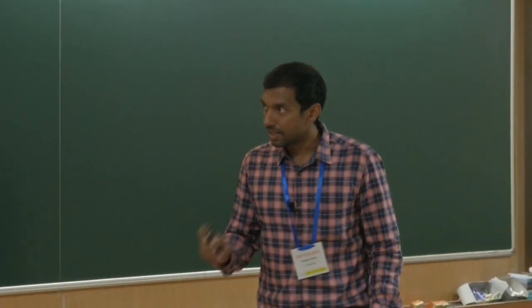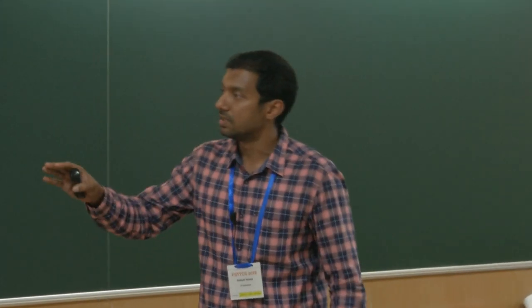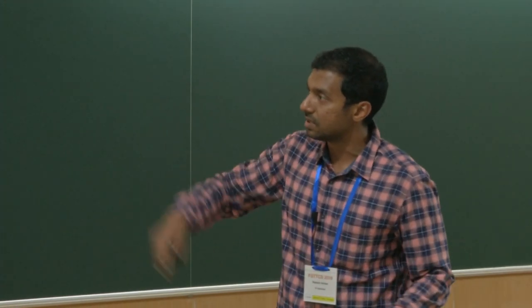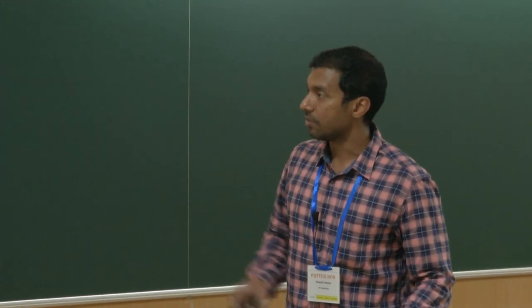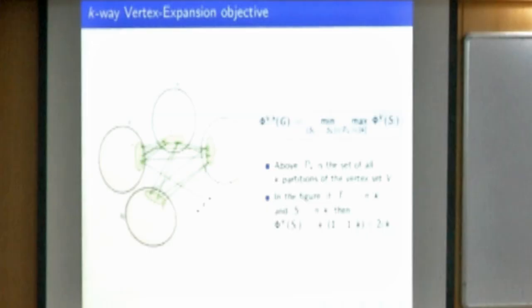Just to give an idea of the ideal case: if each of the sets are of size n/k and the size of the boundary vertex within each component is epsilon times n/k, then this particular partition will have a k-way expansion of something like 2 epsilon times k.